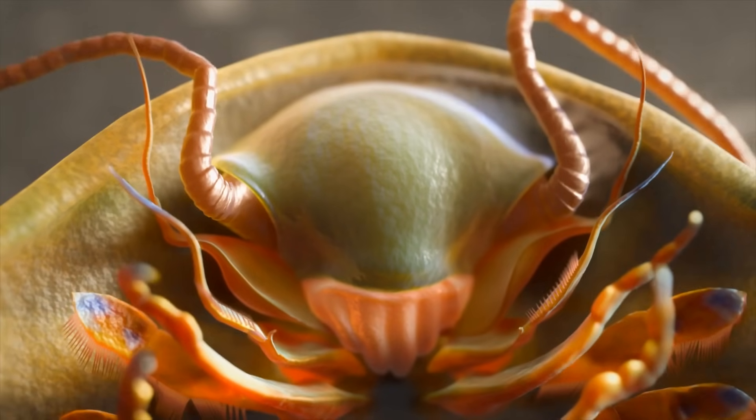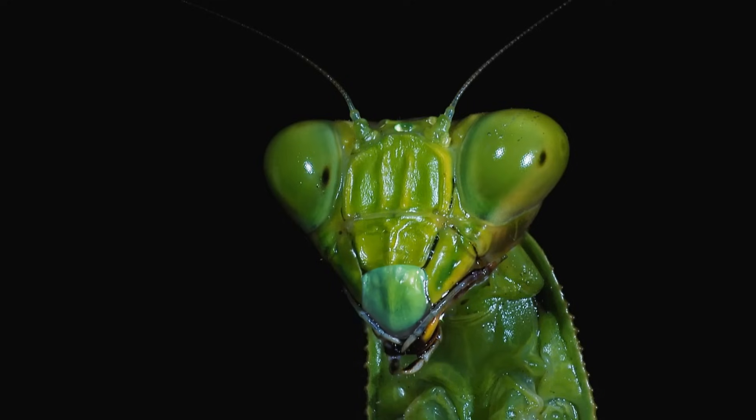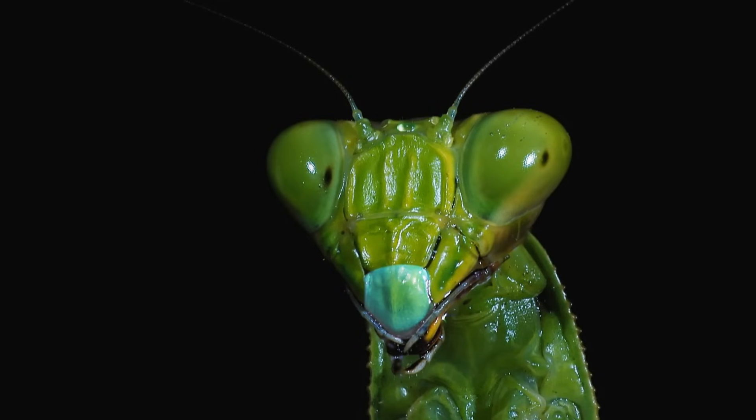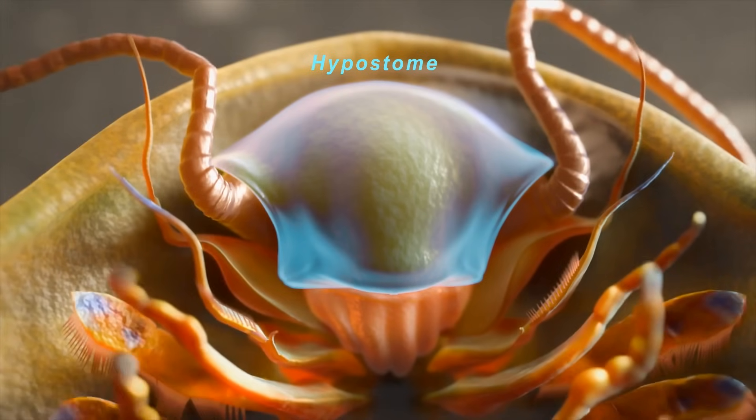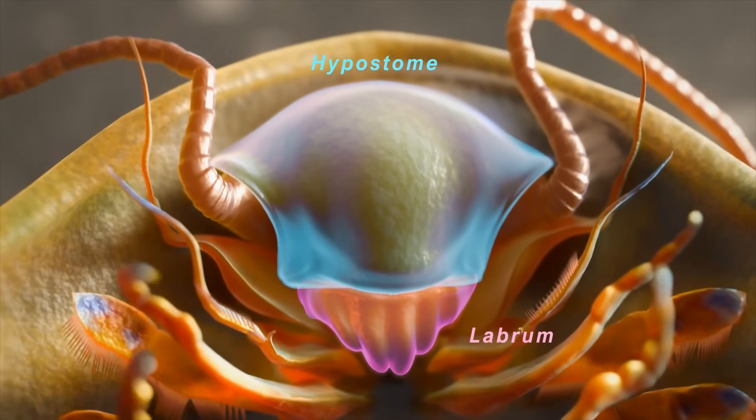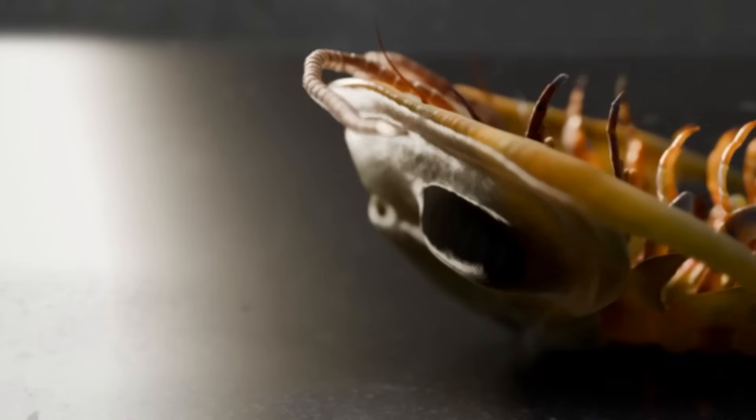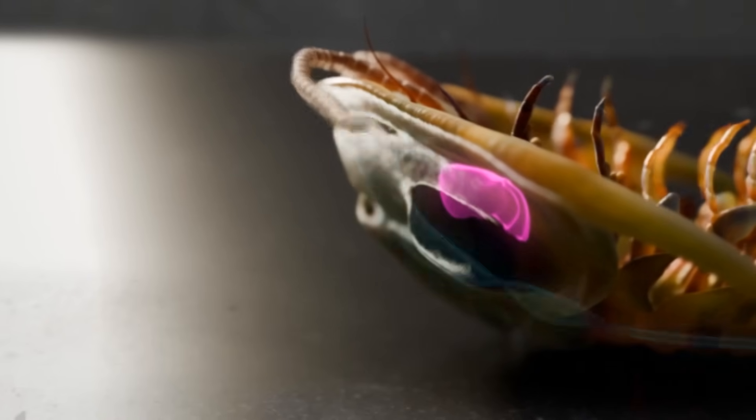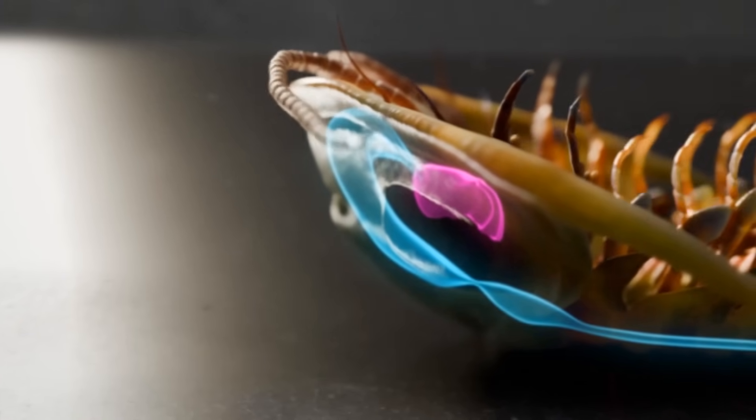The trilobite's mouth parts consist of the hypostome, a structure that's suggested to be homologous to the labrum in modern day arthropods. However, this fossil has revealed that underneath the hypostome is a previously unseen soft tissue that's been identified as the labrum. The CT scan even picked up how it connects to its esophagus and digestive tract.